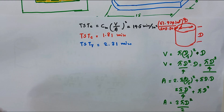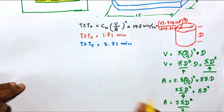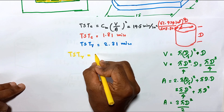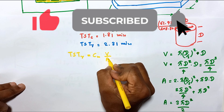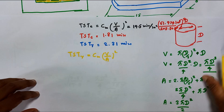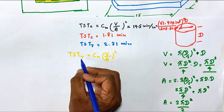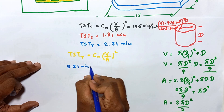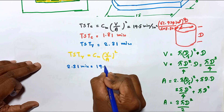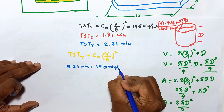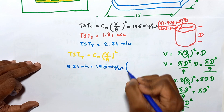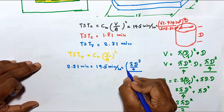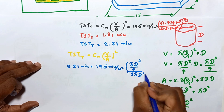Now I am going to substitute these values into Chvorinov's rule. The total solidification time of the riser equals Cm times (V/A) squared. The required solidification time is 2.31 minutes, the mold constant is 19.5 minutes per square inch, and the volume of the riser is πD³/4 divided by the surface area 3πD²/2.